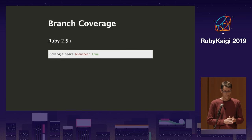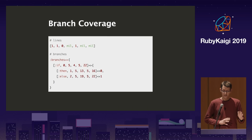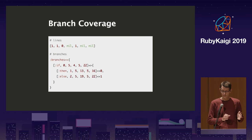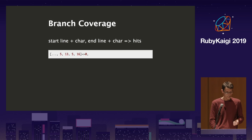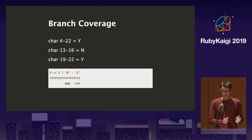With branch coverage, you start it and tell it you want branch coverage. It gives a more complicated result if you're parsing the output. It splits out all the branches you have and tells you from this character to that character whether it was covered — breaking down single-line things. It tells you the start line and end line, so you know what section was covered. For the else branch from the earlier example, you can see the whole branch was hit once, but B was never covered and the C line was.